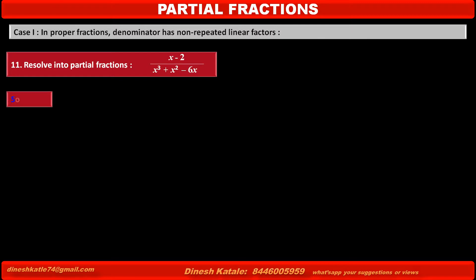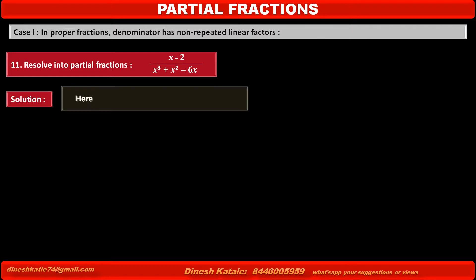Solution. In the given fraction x minus 2 upon x cubed plus x squared minus 6x, we can factorize the denominator, and the fraction becomes equal to x minus 2 upon x into x plus 3 into x minus 2.